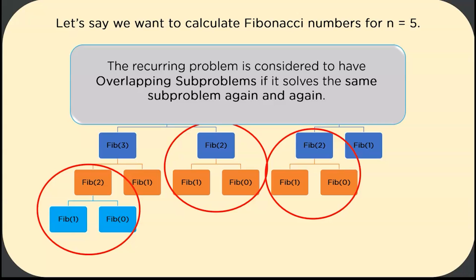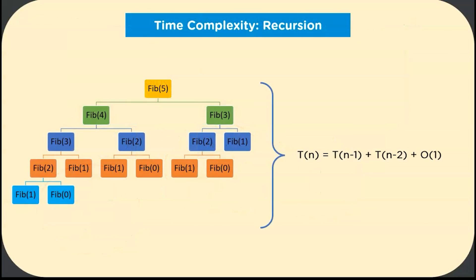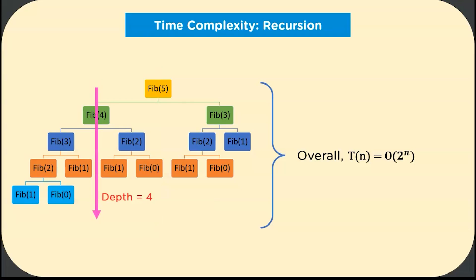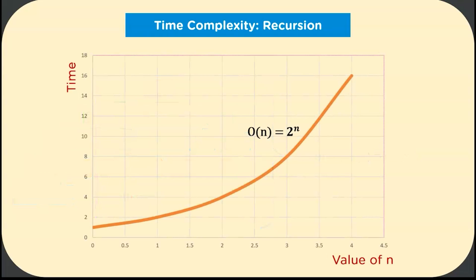Look at the time complexity relation. The time taken to calculate Fib(N) equals the time taken to calculate Fib(N-1) plus the time taken to calculate Fib(N-2) plus the time taken to add these numbers together. Clearly, for N less than or equal to 1, Fib(N) is O(1) as no recursive calls are made. Intuitively, T(N) is O(2^N). We can see this from the recursion tree: for N equals 5, we get a binary tree of depth 5; for N equals 4, a binary tree of depth 4. This implies the time complexity grows at an exponential rate, as shown by the graph on screen.